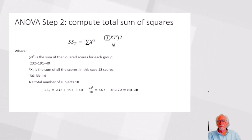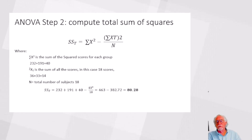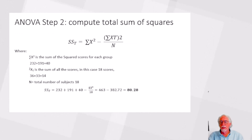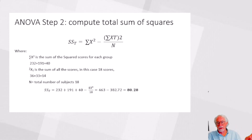The sum of XT — the total of all scores — is 83, and the large N, the total number of subjects, is 18 (six people in each of three groups). Adding gives 463, the division gives 382.72, and the subtraction gives SST = 80.28. We save this number for the ANOVA table coming up.